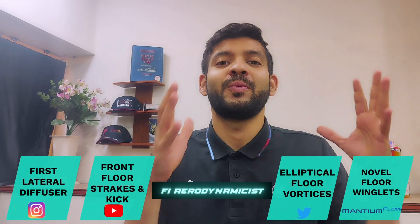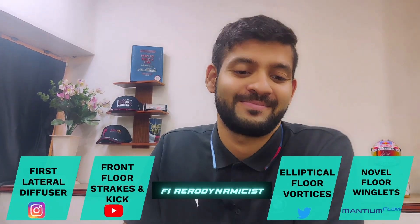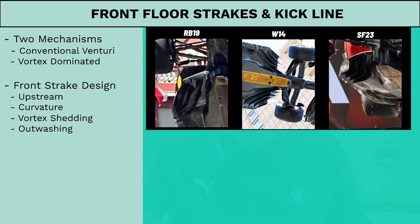To simplify how the floor generates downforce, you can think of it as two mechanisms. First is the conventional venturi tunnel expansion, though one must be careful applying this since the venturi effect is strictly for a closed system such as pipes — the F1 floor works more like an open venturi system, which is more vortex-driven than convection-driven. The second mechanism is how delta wings generate lift — that is, lift produced via the static pressure drop introduced by strong vortices. Exploiting this second effect is where I believe the RB19 truly thrives.